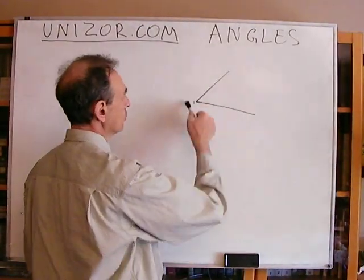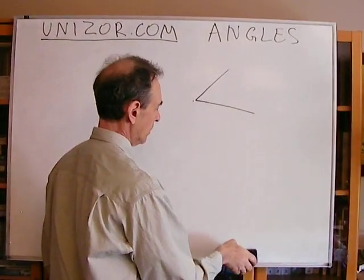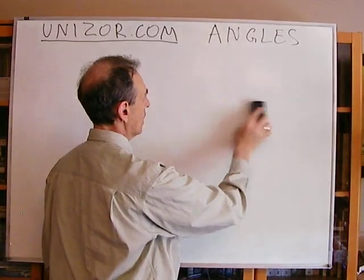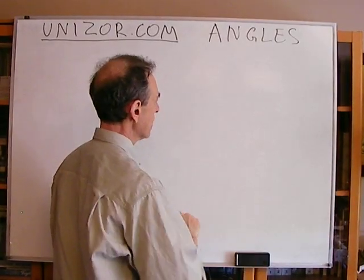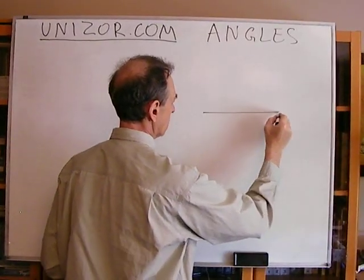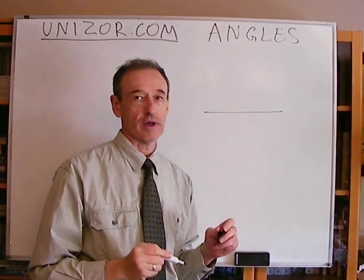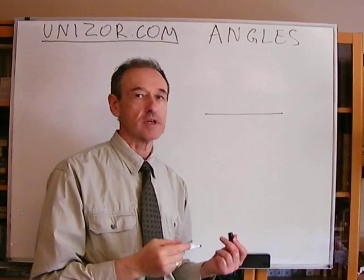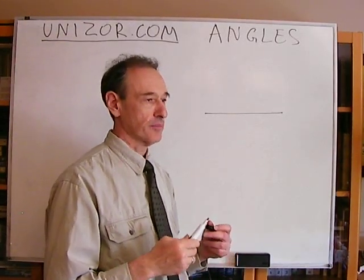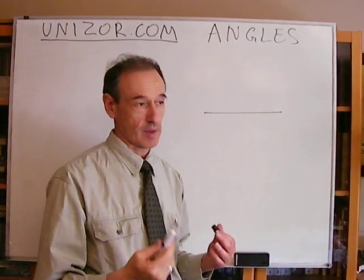So these are two rays, and first we will consider that these two rays coincide. So one and another are on top of each other. It's obviously to call this angle measured as zero of something.